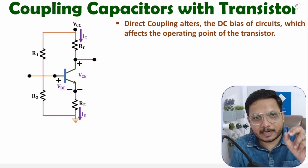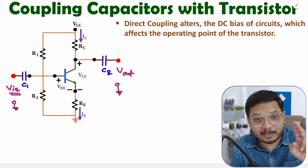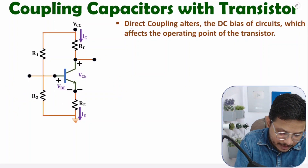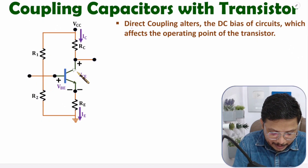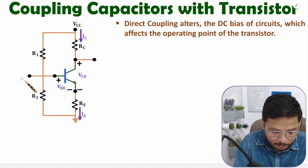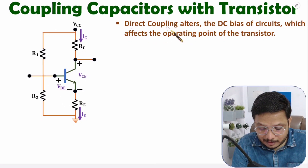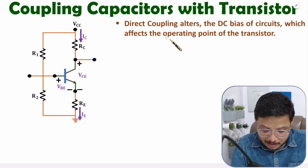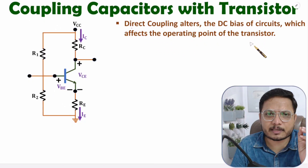Coupling Capacitors are capacitors that we connect in series with Input and Output. Here I will explain Coupling Capacitors with a Transistor Circuit, where we have Input and Output. If you have Direct Coupling instead, it will alter the DC Bias of the circuit. And as the DC Bias of the circuit gets shifted, it will affect the Operating Point of the Transistor.